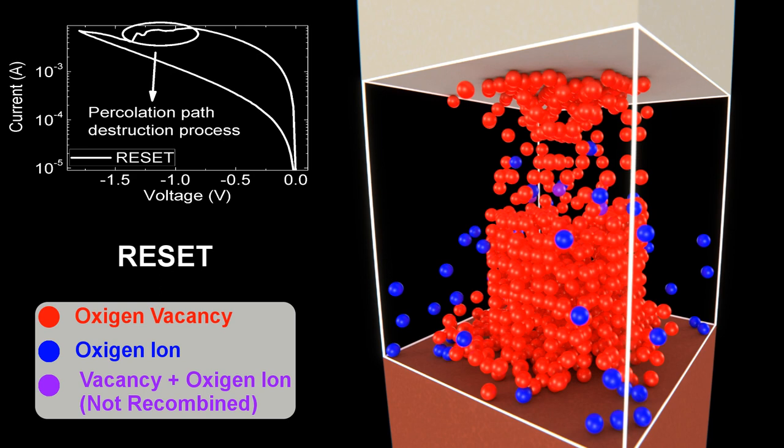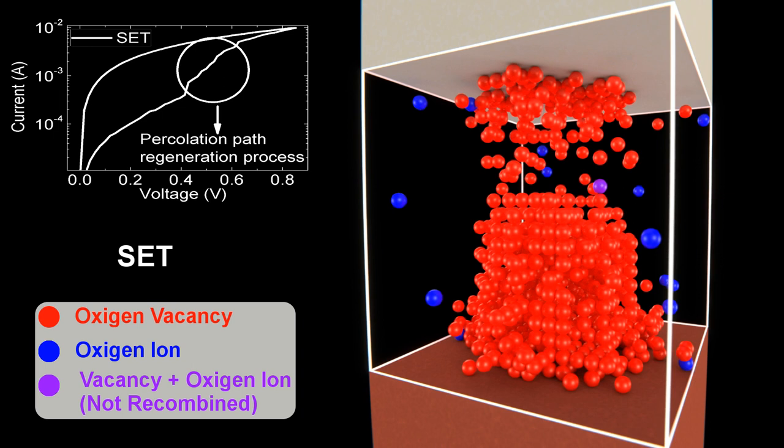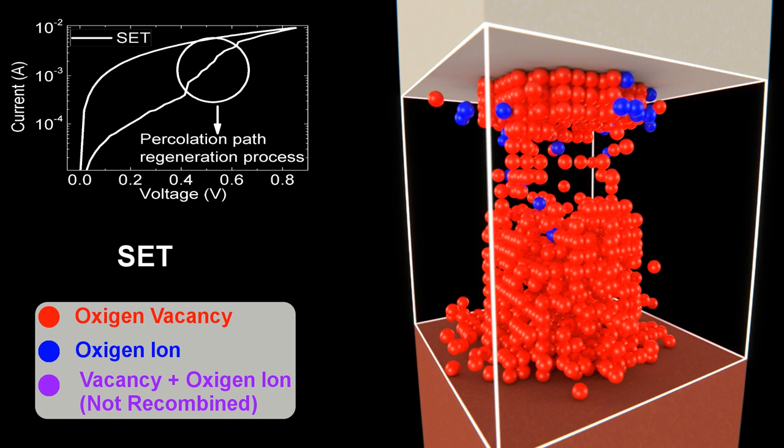The set process resembles the forming process, although the dielectric is not in the pristine state. The conductive filament remnants of the previous reset process are the starting point. A set voltage, lower than the forming voltage, is obtained.